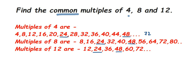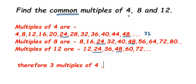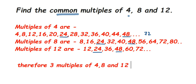Therefore, three common multiples of 4, 8, and 12 are 24, 48, and 72. If the question asks for five common multiples, you would need to keep multiplying further to find more. I hope this is clear — if you have any questions, drop a comment. Thanks for watching!